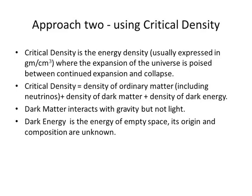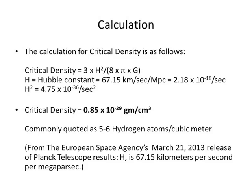In our second approach, we will use critical density to calculate the mass of ordinary matter. Critical density is the energy density — usually expressed in grams per cubic centimeter — where the expansion of the universe is poised between continued expansion and collapse. Critical density equals the density of ordinary matter plus the density of dark matter plus the density of dark energy. Dark matter interacts with gravity but not light. Dark energy is the energy of empty space; its origin and composition are unknown. Using the current value for the Hubble constant, the result is 0.85 times 10 to the minus 29th grams per cubic centimeter, commonly quoted as 5 to 6 hydrogen atoms per cubic meter.